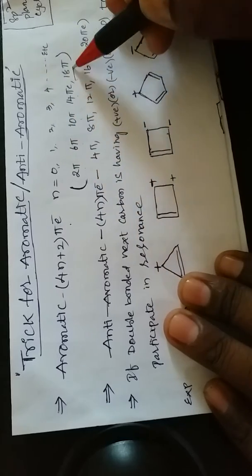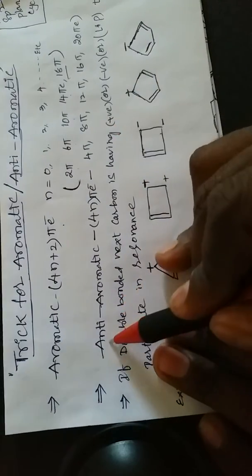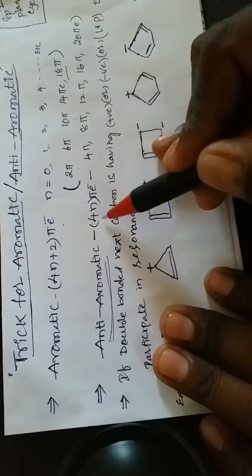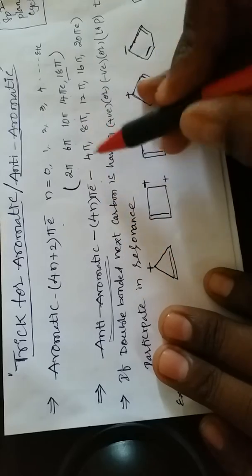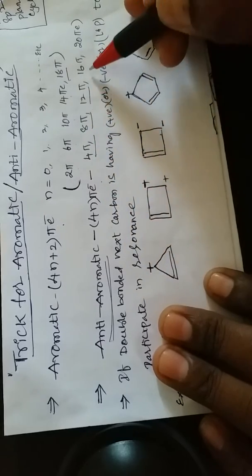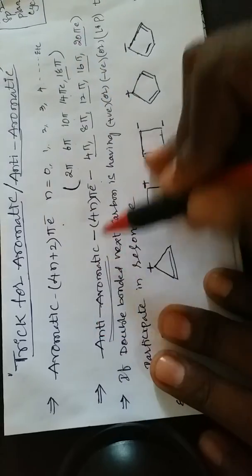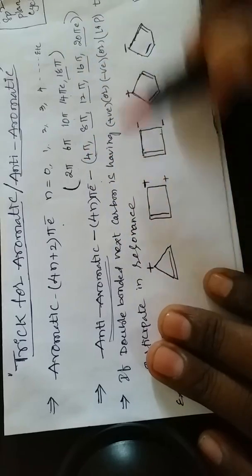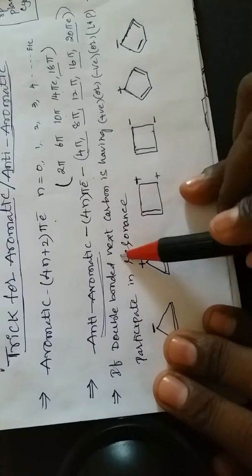When n=4, that gives 18 pi electrons. For anti-aromatic compounds, the formula is 4n pi electrons. So the anti-aromatic pi electron counts are 4, 8, 12, 16, and 20 pi electrons. These pi electron counts belong to anti-aromatic compounds.